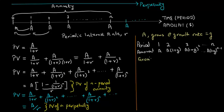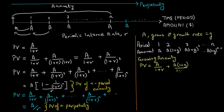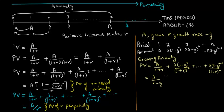The present value of a growing annuity equals A dollars discounted at periodic interest rate R, plus A times (1 plus G) divided by (1 plus R) squared, plus subsequent cash flows discounted accordingly, until the Nth cash flow of A times (1 plus G)^(N minus 1) discounted over N periods at rate R. This simplifies to A times [1 minus ((1 plus G)/(1 plus R))^N] divided by (R minus G). This formula helps us calculate the present value of a growing annuity.